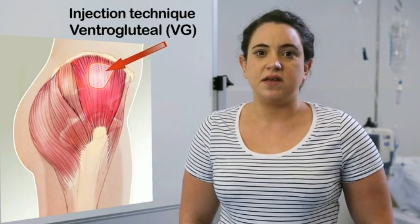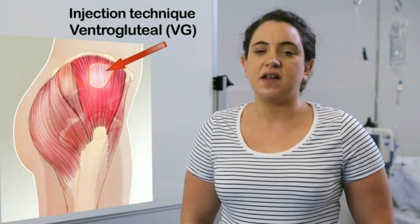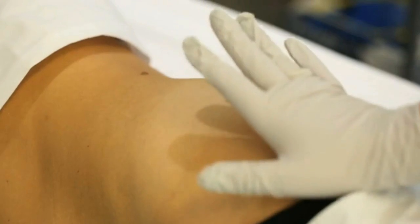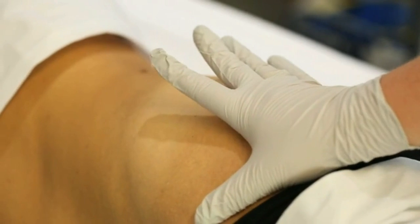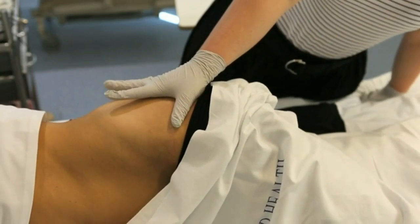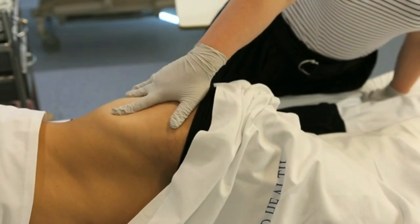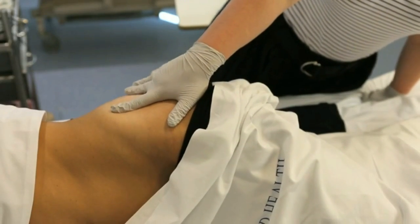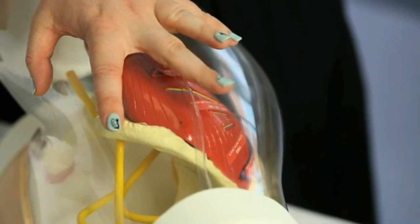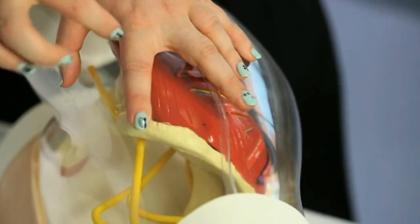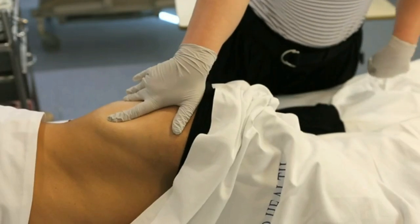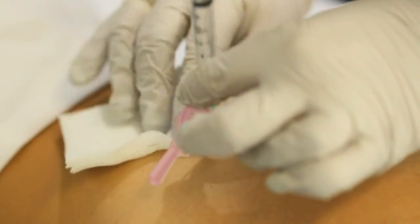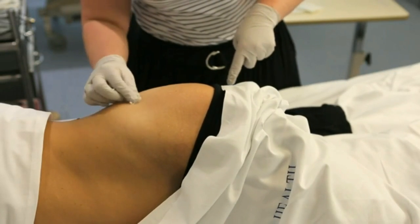Ventrogluteal injection method: Place the patient ideally in a side-lying position. Use your right hand on the patient's left hip, or left hand on the right hip. With the palm of your hand, locate the greater trochanter of the femur. Place your index finger towards the anterior superior iliac spine, and fan the middle finger as far along the iliac crest as you can reach. The thumb should always be pointed towards the front of the leg. The injection site is in the middle of the triangle between the middle and index fingers. Once you are happy with the site, mark it, then remove your fingers prior to inserting the needle.